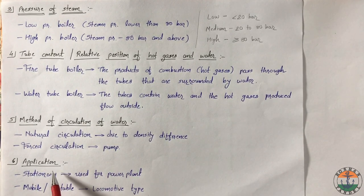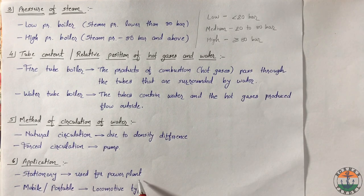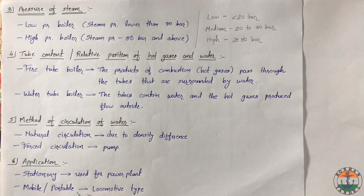Based on the application, boilers are classified into stationary boilers and mobile or portable boilers. Stationary boilers are mainly used for power generation, whereas locomotive is the example of portable boiler.